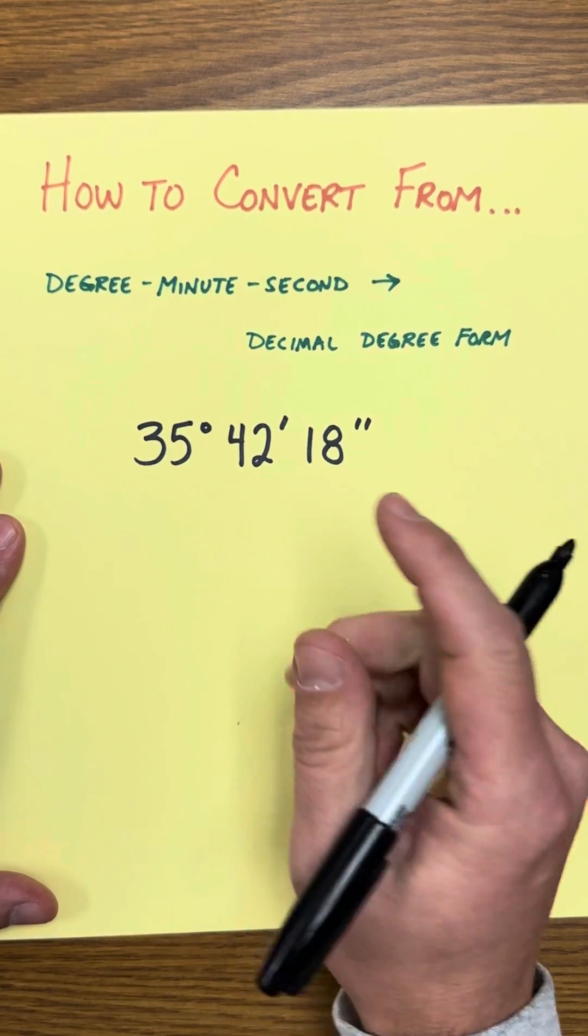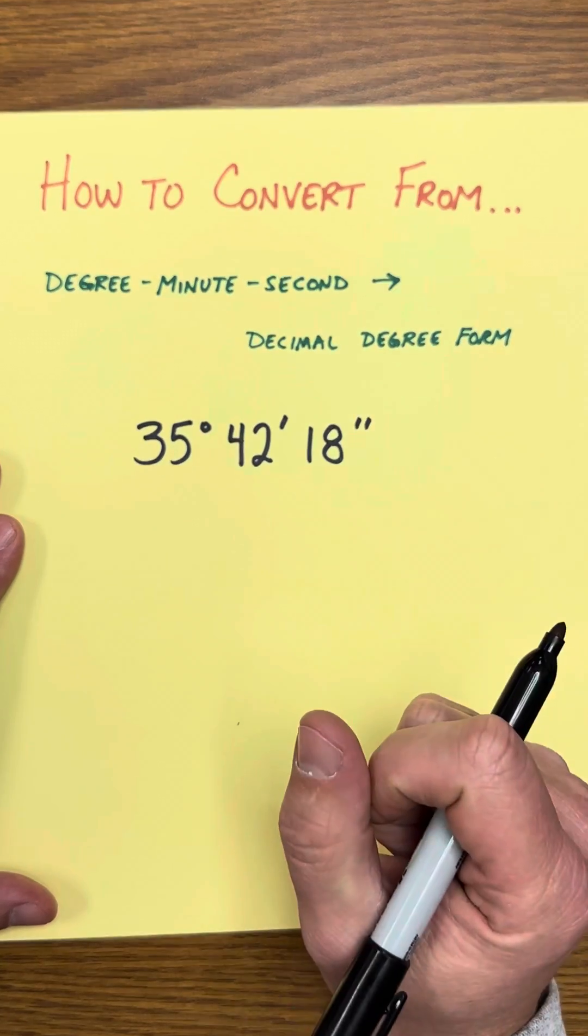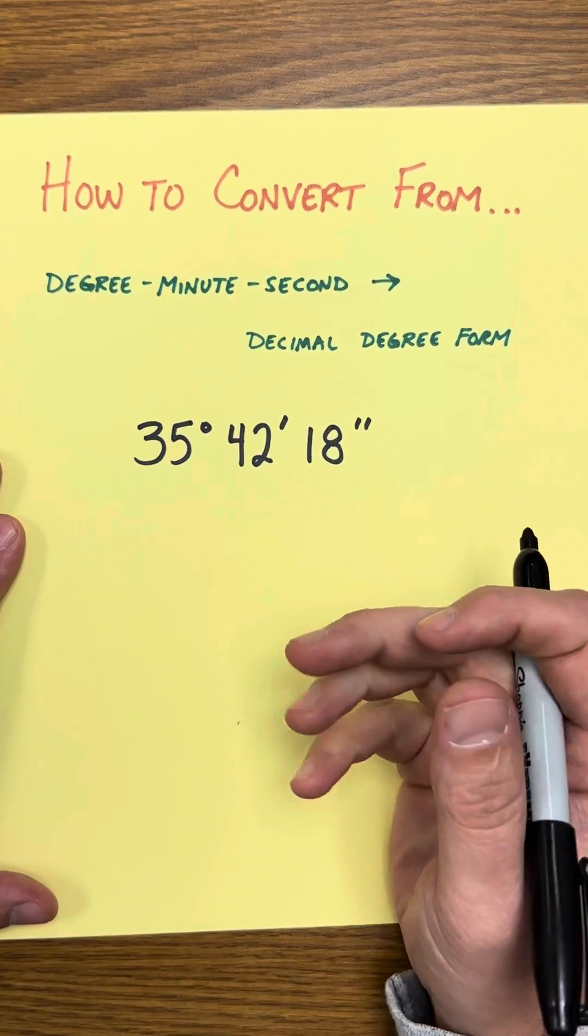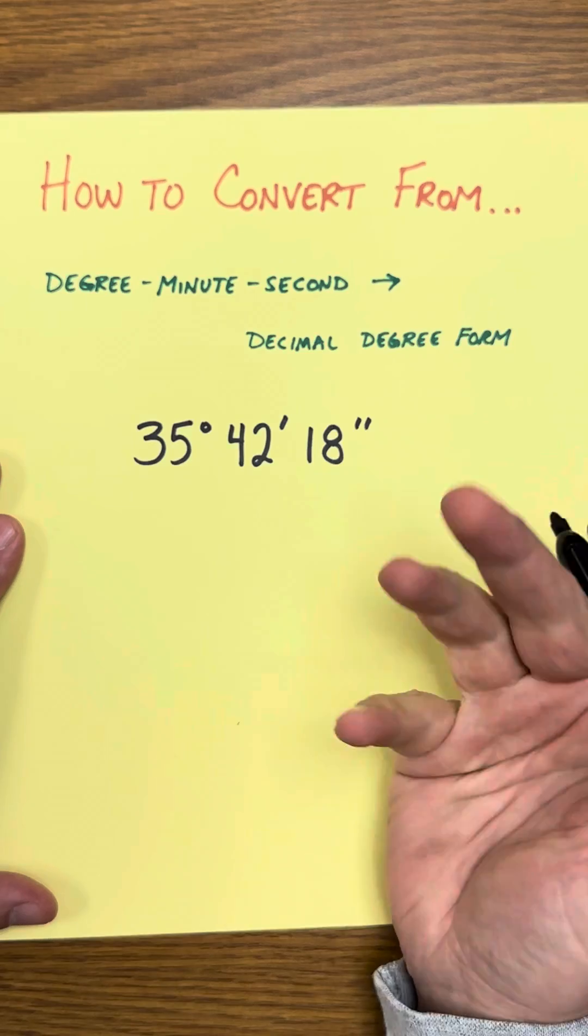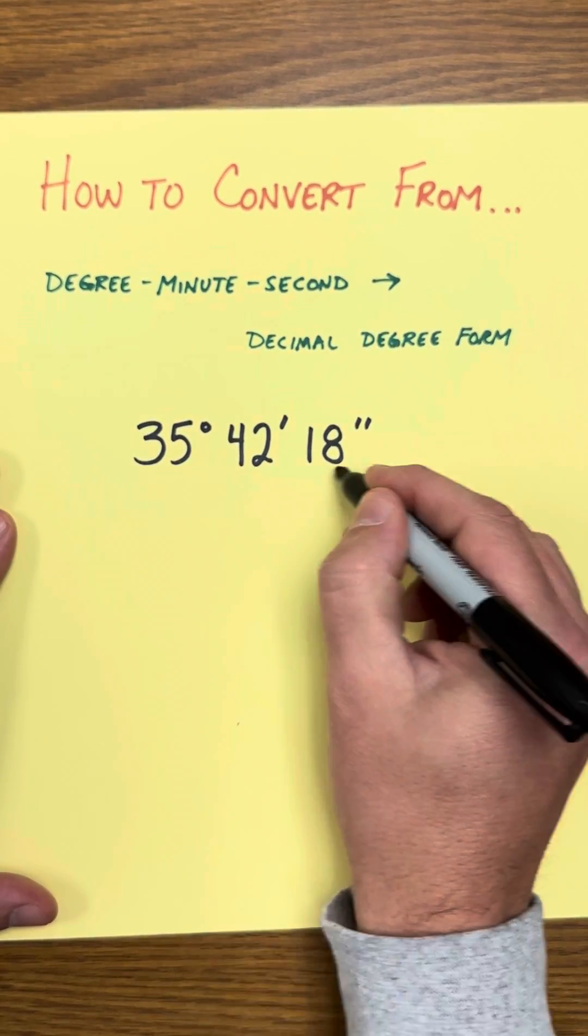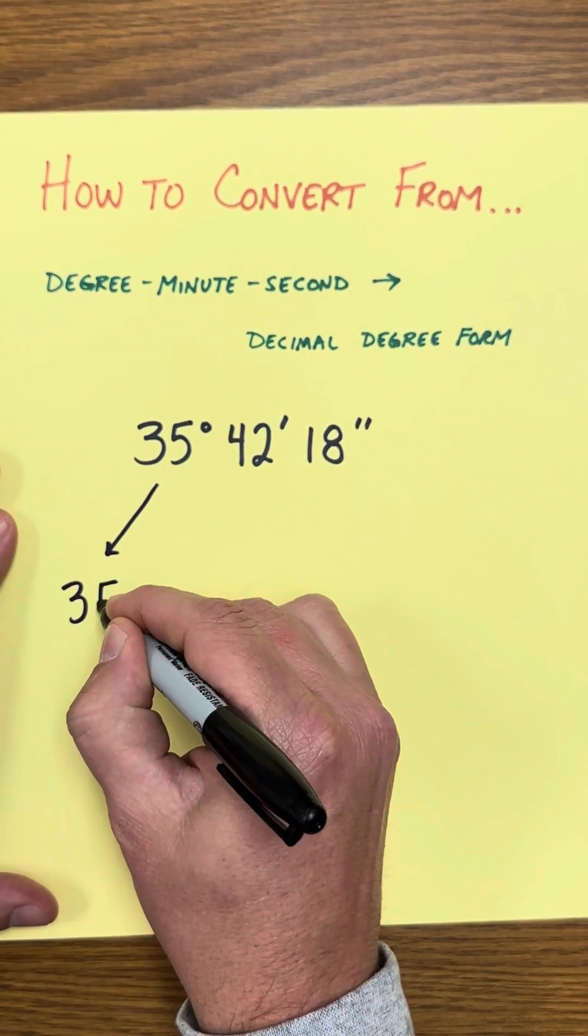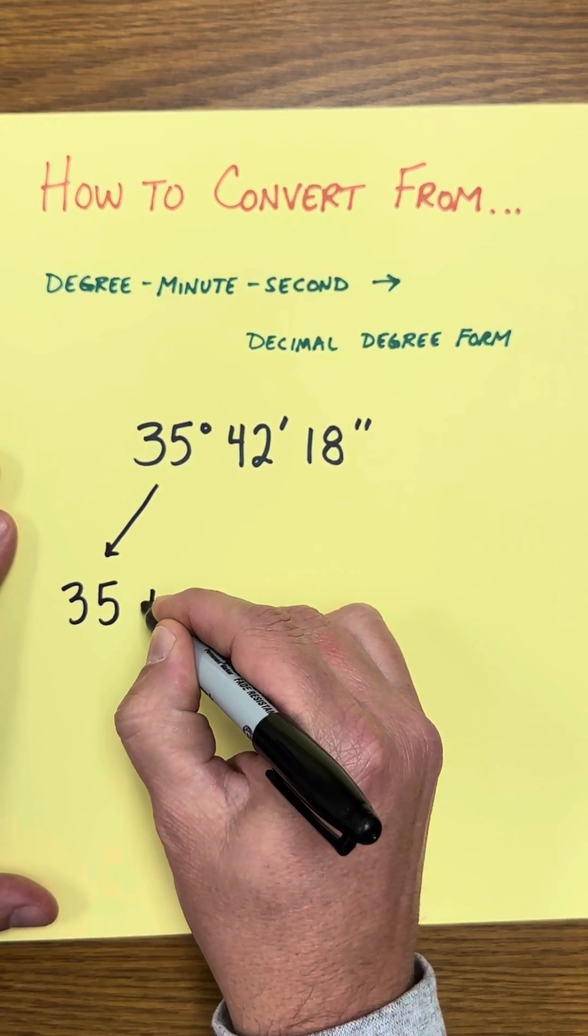So minutes and seconds are just used to express a fractional part of a degree or a decimal part of a degree. So how we convert into decimal form is I'm just going to take all these different parts. The 35, I'm not going to do anything with that. So I want 35 plus.